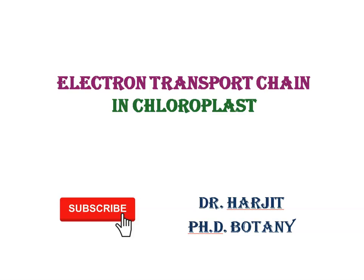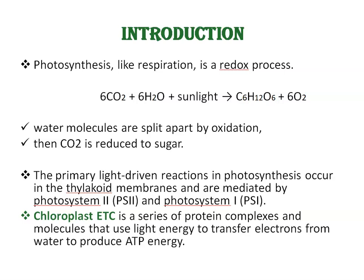Today's topic is the Electron Transport Chain in Chloroplast. The chloroplast electron transport chain is a series of multiprotein complexes that transfer electrons from electron donors to electron acceptors via redox reactions, and couples the electron transfer with proton transfer across the thylakoid membrane. This creates an electrochemical proton gradient that drives the synthesis of ATP, adenosine triphosphate, which means energy-rich molecules.